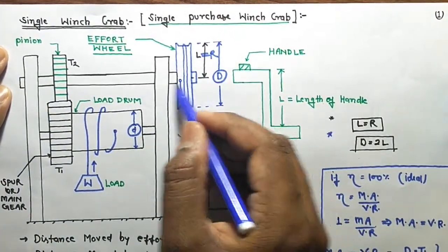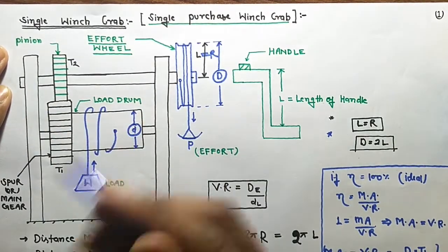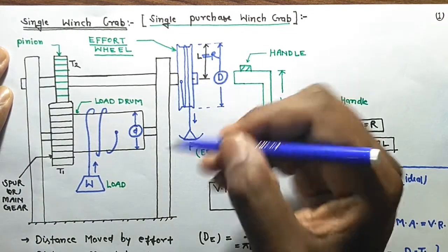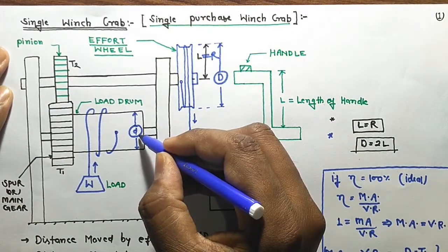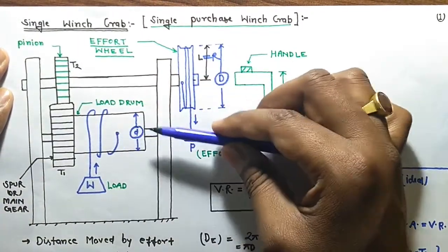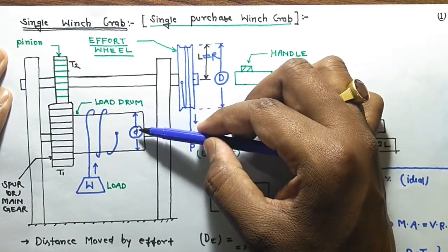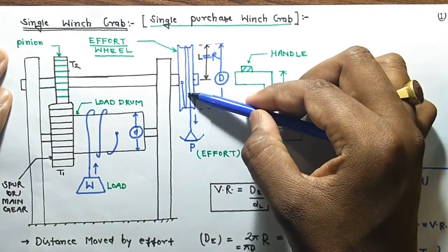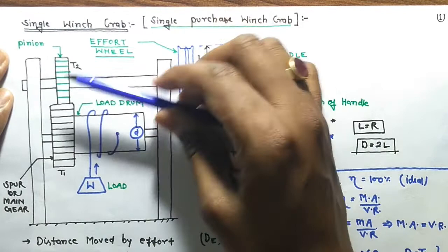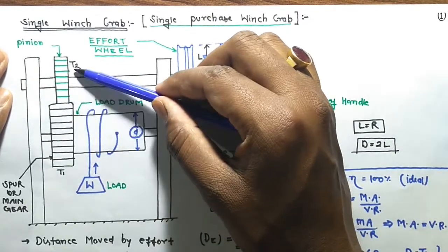If the handle makes one revolution, the pinion also makes one revolution because they are on the same shaft. The distance moved by the effort in one revolution is 2πR or πd. Since the pinion meshes with the main gear and the gear ratio is T2/T1, the main gear (and therefore the load drum) rotates by T2/T1 revolutions for every one revolution of the effort.